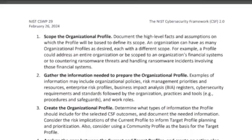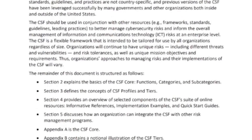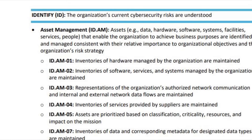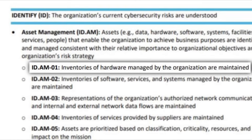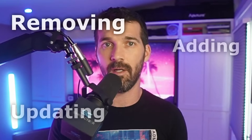The NIST CSF is not a prescriptive framework that says, for example, use text messages for multi-factor authentication — that would be way too prescriptive. Instead, it documents desirable outcomes for an organization's InfoSec program across 21 categories and 112 subcategories. For example, under asset management, there's ID.AM-01, which states: inventories of hardware managed by an org are maintained. It's a simple outcome — a solid information security control — where the goal is to know what hardware you have in your environment and have processes for adding, updating, and removing hardware.